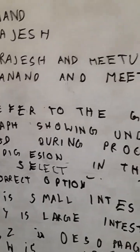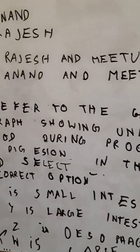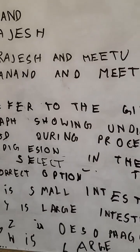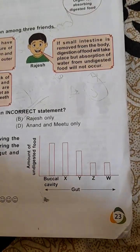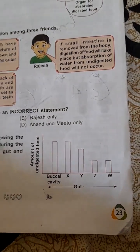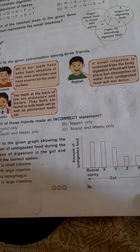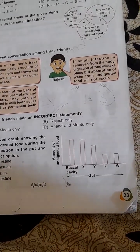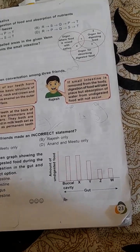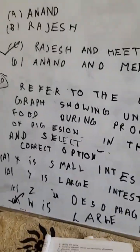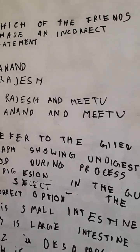Refer to the given graph showing undigested food during the process of digestion in the gut, and select the correct option. X is not the small intestine and Y is also not the large intestine. Z is not the esophagus. W is the large intestine — yes, W is the large intestine. So the correct option is option D, W is the large intestine. Bye bye, hope you liked this video.